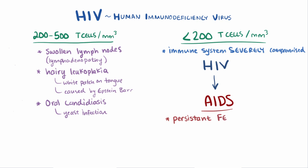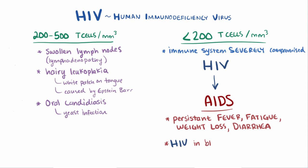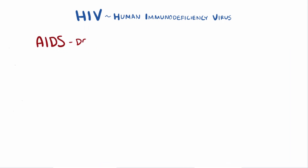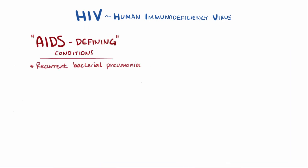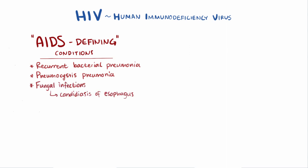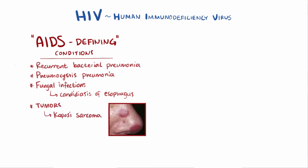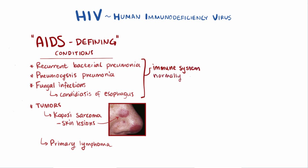At this stage, people experience persistent fever, fatigue, weight loss, and diarrhea, and HIV count in the blood may increase significantly. Certain AIDS-defining conditions develop, such as recurrent bacterial pneumonia, pneumocystis pneumonia, and fungal infections like candidiasis of the esophagus. Other conditions include tumors and malignancies like Kaposi's sarcoma, which causes lesions on the skin and soft tissue, and primary lymphoma of the brain. Many people with AIDS die from opportunistic infections like pneumocystis, cytomegalovirus, or mycobacterium avium complex.